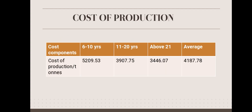Next is about cost of production per year. The cost of production per ton of mango in different years is calculated from 6 to 10 years, 11 to 20 years, and above 21 years, and the mean average is calculated as four thousand one hundred eighty-seven point seven eight rupees per ton.